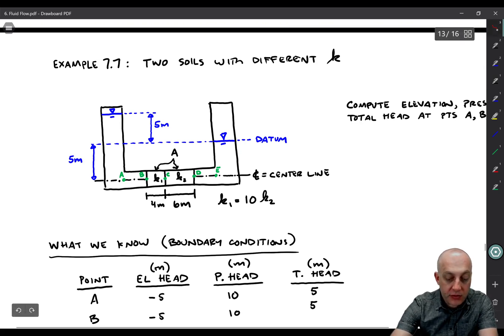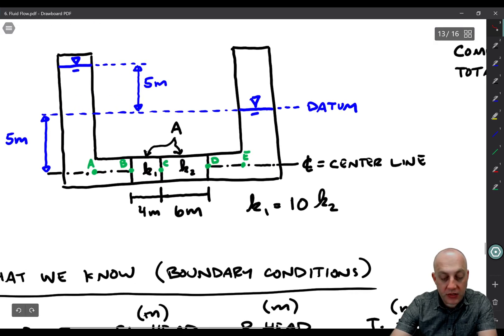Here's what we have. We have a water level of five meters on the left side and relative to zero on the right side. We're going to put the datum in the tailwater on the right side. Five meters below the datum we have the center line of the soil, which has two different specimens in series. One with a hydraulic conductivity of K1 that's four meters long, and one with K2 that's six meters long.